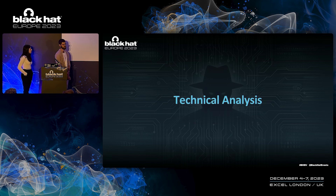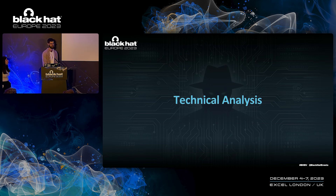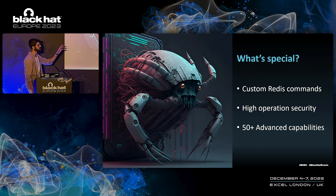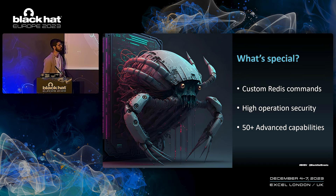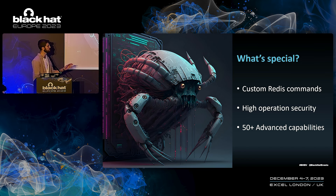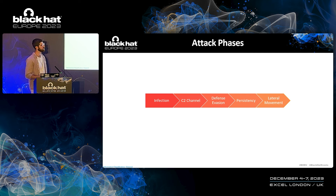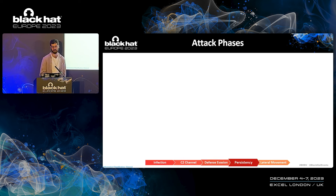Now let's take a look at the technical analysis of the malware. First, HeadCrab makes use of custom Redis commands — a feature of Redis — in order to establish its C2 communication channel. The second thing is the high operation security implemented inside the malware. In addition, we have another 50-plus advanced capabilities, which is really unique. Usually we see malware that support command execution and file dropping, but we have over 50 capabilities, ranging from dropping a file and command execution all the way to loading a fileless kernel module. We'll go through the attack phases: infection, C2 channel, defense evasion, persistency, and lateral movement.